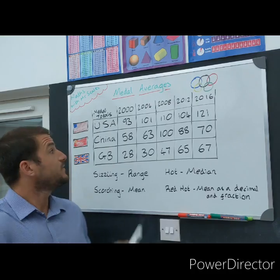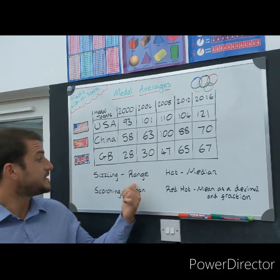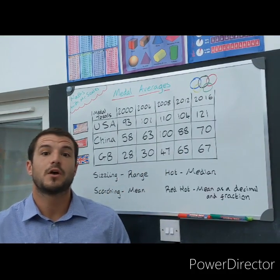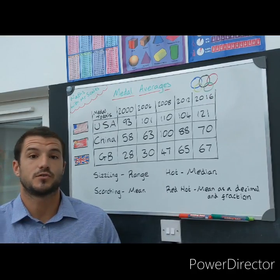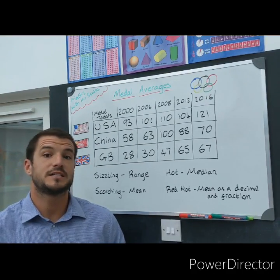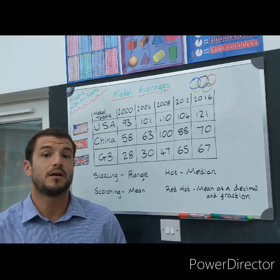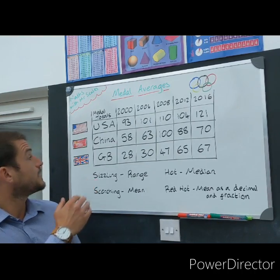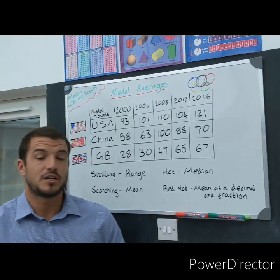Now with the data that's in the table, we have the sizzling challenge, which is where you're going to be working out the range for each of those countries. Just a reminder: range is the largest number take away the smallest number. So for our sizzling challenge you'll be doing that for USA, China and GB.